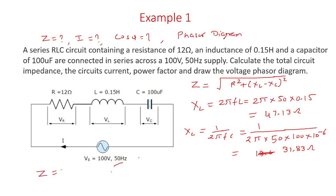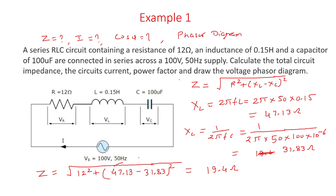Impedance is the square root of R squared plus (XL minus Xc) whole squared. Substituting: square root of 12 squared plus (47.13 minus 31.83) whole squared. After solving this equation, we get the impedance equal to 19.4 ohm. For the calculation of impedance, we required the resistor, inductive reactance XL, and capacitive reactance Xc. XL is calculated by 2πFL and Xc by 1 divided by 2πFC, then we substitute all values to find impedance.